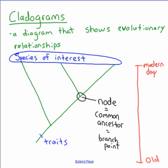The last topic is cladograms — diagrams that show evolutionary relationships. The top of the cladogram shows the species of interest, which are usually modern-day species such as sheep, snails, humans, and chimpanzees. The further down you go on the cladogram, the further back in time you are going, so the bottom of the cladogram represents the oldest organisms.